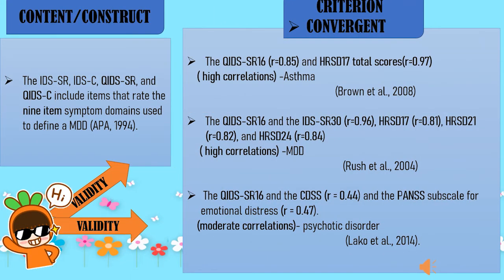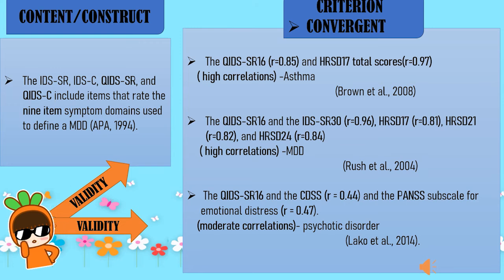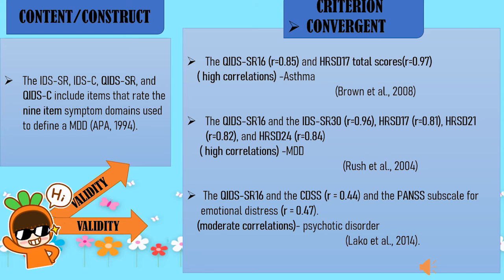For validity, regarding content validity, the IDS-SR, IDS-C, QIDS-SR, and QIDS-C include items that rate the nine-item symptom domains used to define MDD. For criterion validity — convergent — the QIDS-SR16 and HRSD-17 total scores showed high correlations (r = 0.97). The QIDS-SR16 and IDS-SR30 showed r = 0.96; HRSD-17 r = 0.81; HRSD-21 r = 0.82; and HRSD-24 r = 0.84, all indicating high correlations. The QIDS-SR16 and CDS-SR showed r = 0.44, and the PANSS subscale for emotional distress r = 0.47, indicating moderate correlations.